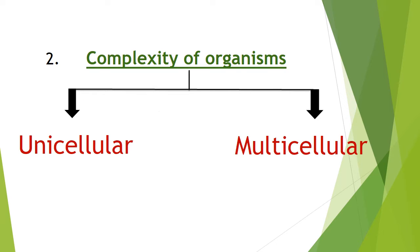Number two: complexity of organisms. Again, it gets divided into two types — unicellular and multicellular. Unicellular means they have a single cell, whereas multicellular means they have multiple or many cells.